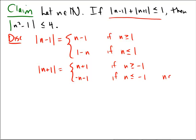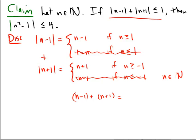Since n is a natural number, n must be greater than or equal to 1. So the negative cases don't apply. The absolute value of n minus 1 is just n minus 1, and the absolute value of n plus 1 is just n plus 1. Adding them gives n minus 1 plus n plus 1, which equals 2n. Since n is a natural number, 2n is always greater than or equal to 2 times 1, which equals 2. So there's no way it would ever be less than or equal to 1.